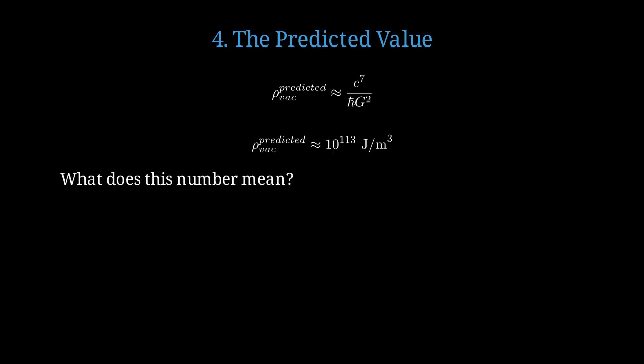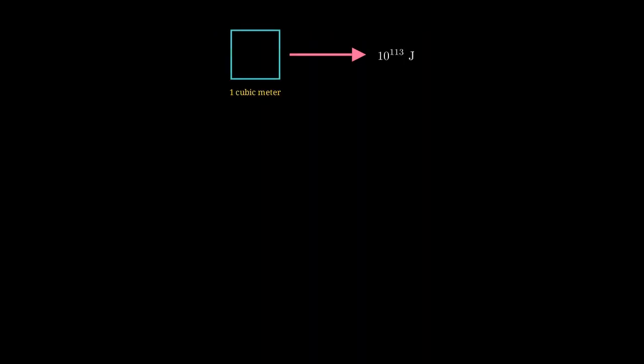Let's put this in perspective. What does 10 to the 113 joules per cubic meter actually mean? One cubic meter of empty space should contain enough energy to power the entire universe for longer than its current age, many times over.